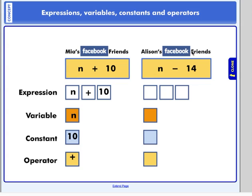For Allison's Facebook friends, we wrote the expression n minus 14. n is a variable, 14 is a constant, and the operator was our subtraction. These are just to help you be familiar with some of these terms that you might hear while we're working with algebra.